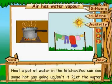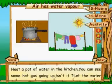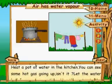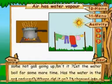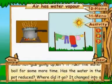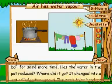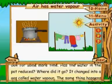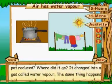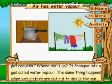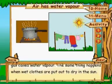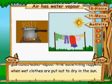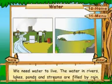Heat a pot of water in the kitchen. You can see some hot gas going up, isn't it? Let the water boil for some more time. Has the water in the pot reduced? Where did it go? It changed into a gas called water vapor. The same thing happens when wet clothes are put out to dry in the sun. We need water to live.